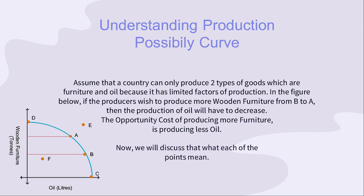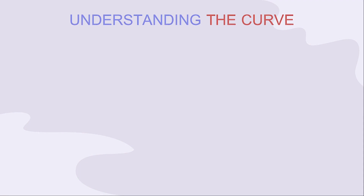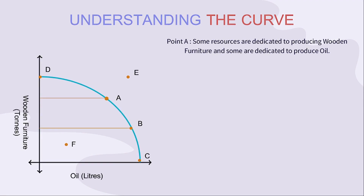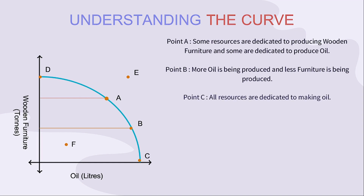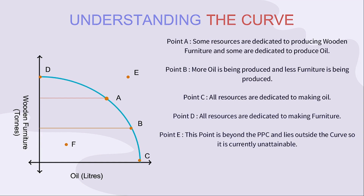Now, we will discuss what each of the points means in the graph. In Point A, some resources are being used to produce wooden furniture and some are used for producing oil. In Point B, more oil is being produced and less furniture is being produced. In Point C, all resources are dedicated to making oil. In Point D, all resources are dedicated to making furniture.